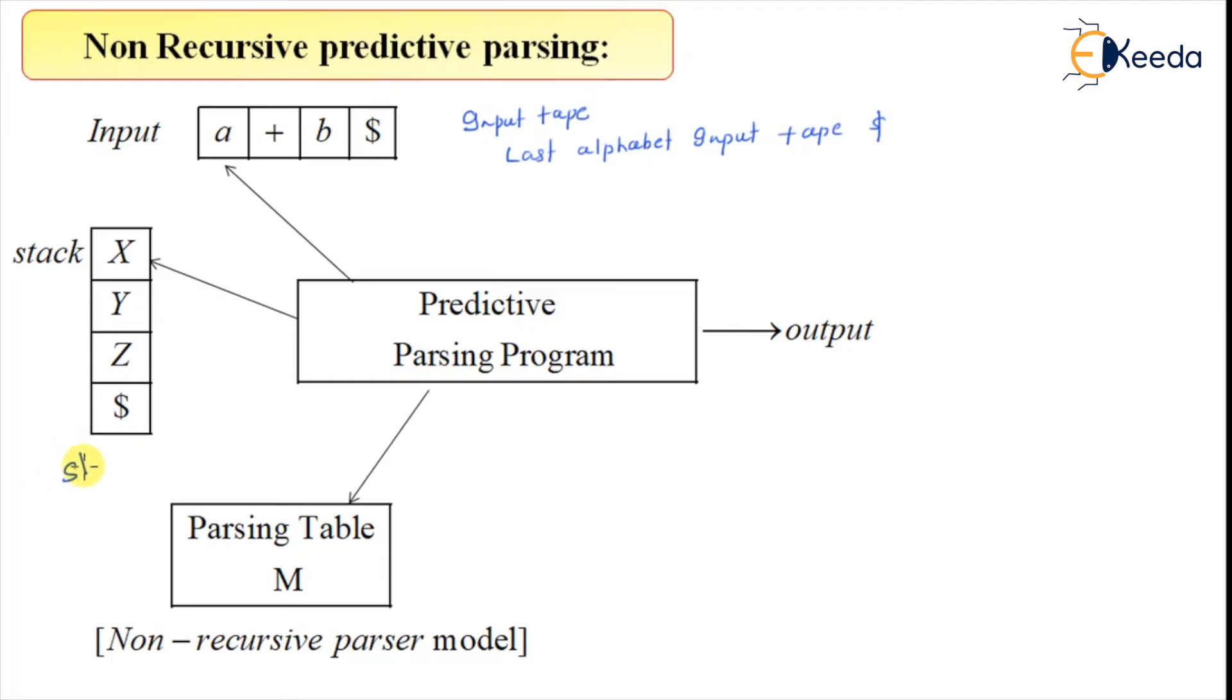This arrow will point to the current input symbol and the top of the stack. This arrow will always point to top of stack and this will point to the input tape symbol.